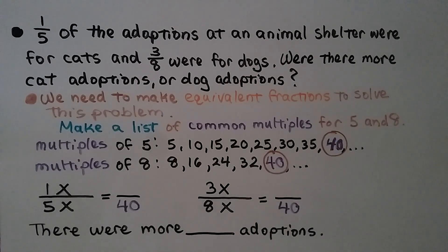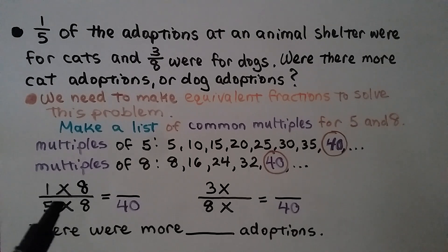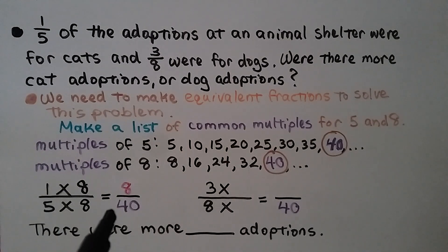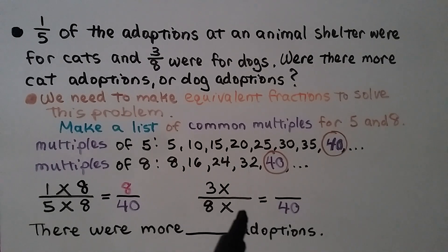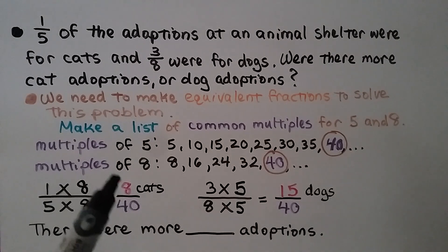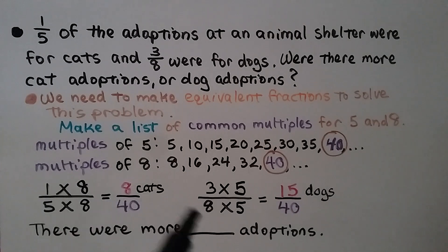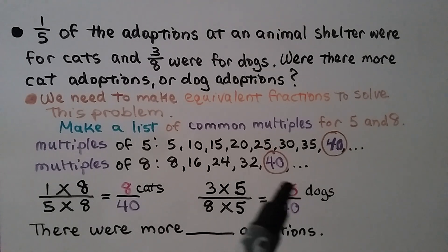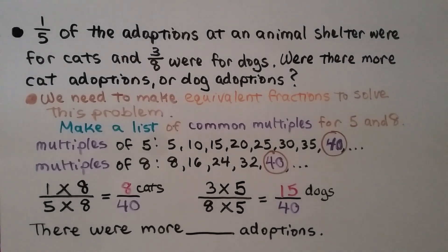Five times eight equals forty, so we multiply the numerator of one-fifth by eight: one times eight equals eight, giving eight-fortieths. Eight times five equals forty, so we multiply the numerator of three-eighths by five: three times five equals fifteen, giving fifteen-fortieths. Out of forty animals, eight were cats and fifteen were dogs. So there were more dog adoptions. Three-eighths is more than one-fifth.